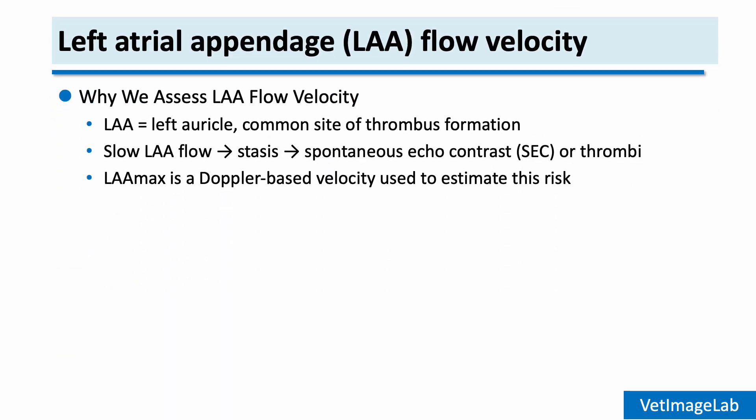To evaluate the risk of thrombus formation in cats with HCM, we often assess left atrial appendage, or LAA, flow velocity. The left atrial appendage, also commonly referred to as the left auricle, is a small outpouching of the left atrium where blood flow can become stagnant. In cats with HCM, flow within the LAA can be very slow, and this blood stasis may lead to spontaneous echo contrast or even clot formation. That's why measuring LAA flow velocity is helpful in assessing the risk of thromboembolism.